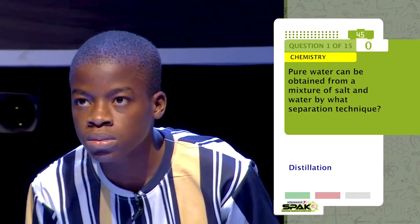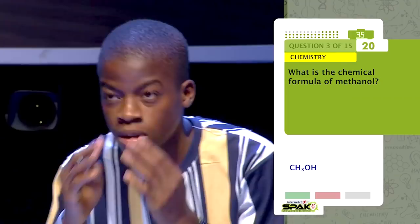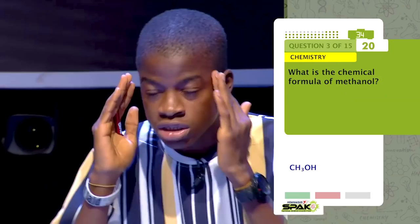Pure water can be obtained from a mixture of salt and water by what separation technique? Evaporation. Which compound is produced when nitrogen reacts with hydrogen? Ammonia. What is the chemical formula for methanol? C2H5OH.